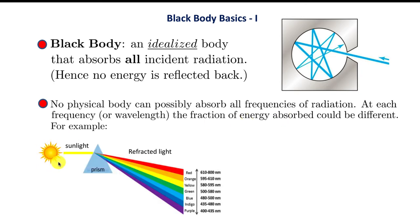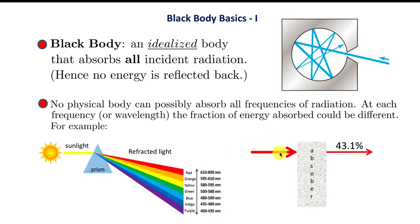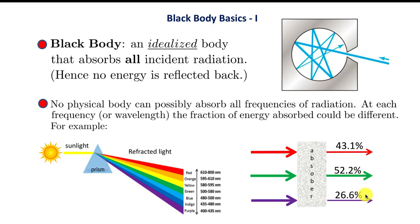For example, if you take sunlight and pass it through a prism, it breaks up into different visible colors from red to purple and beyond. If you then pass each color through some absorbing material, perhaps 43.1% of the red radiation gets through, more of the green gets through, and less of the purple. An absorber has atoms inside; the incident electromagnetic wave shakes those atoms, which then re-radiate light of the same frequency, while some incoming radiation is converted into random motion contributing to heat.